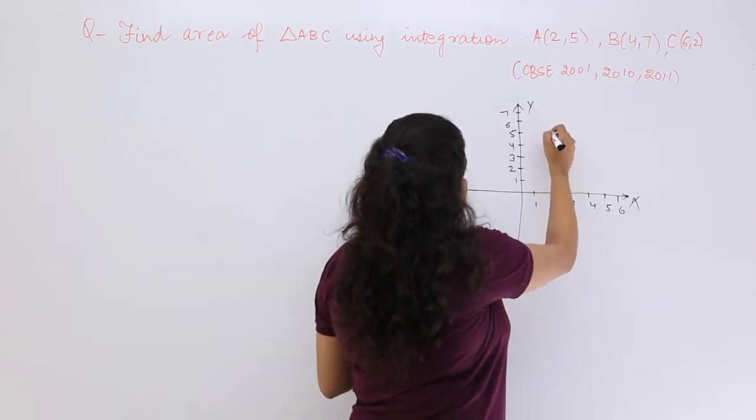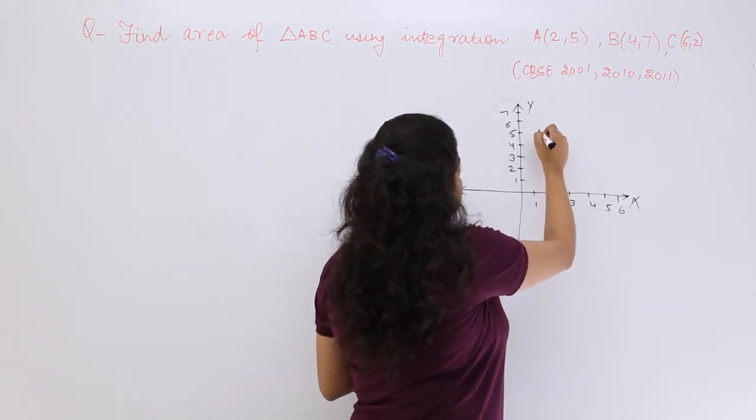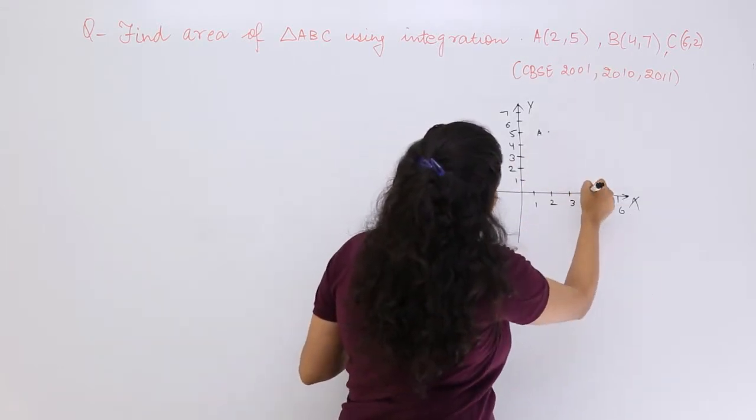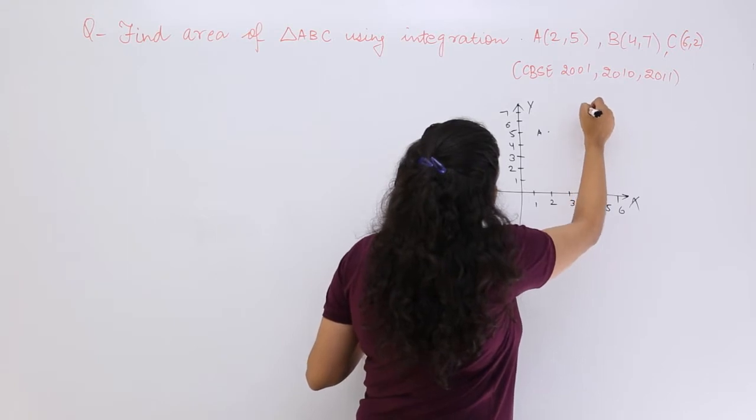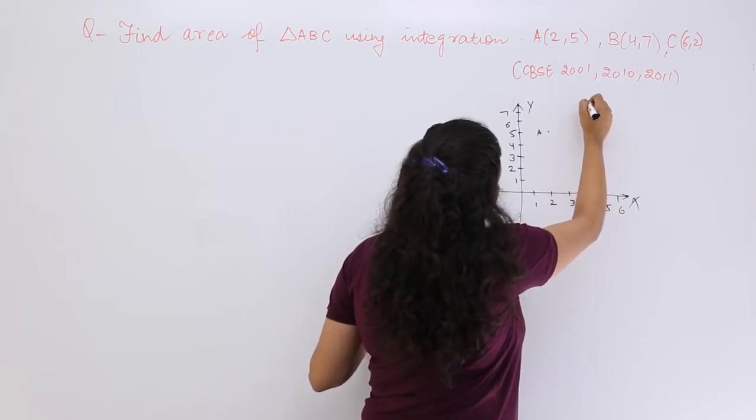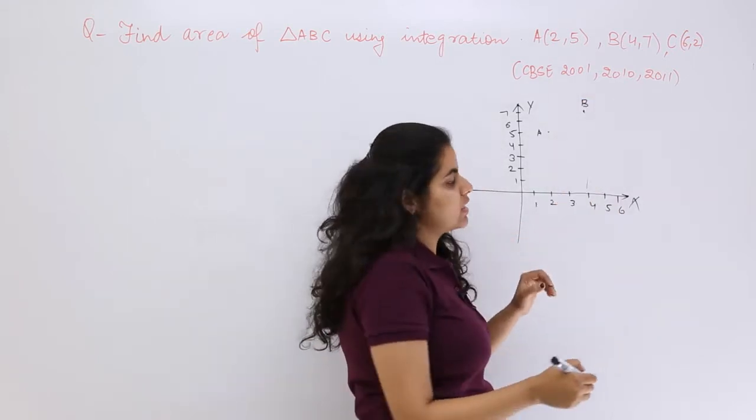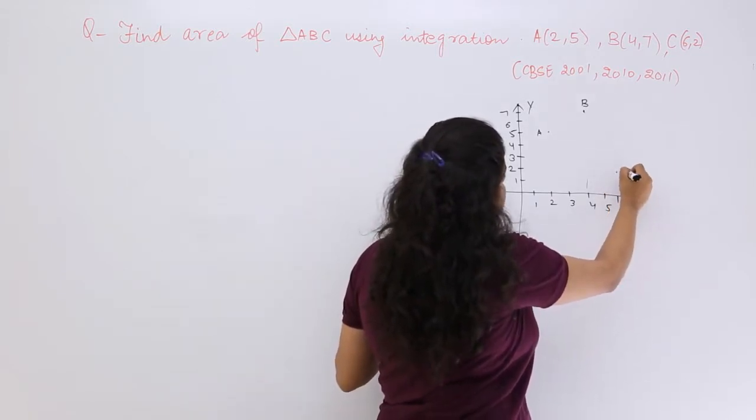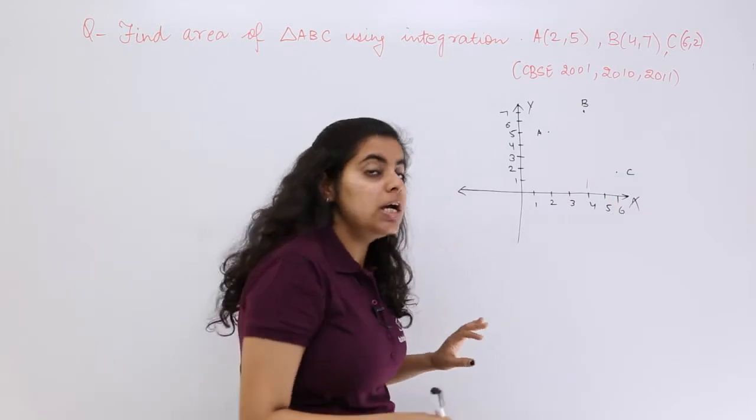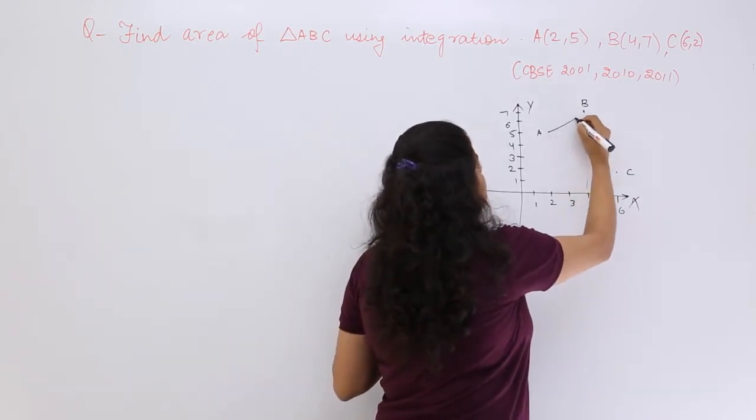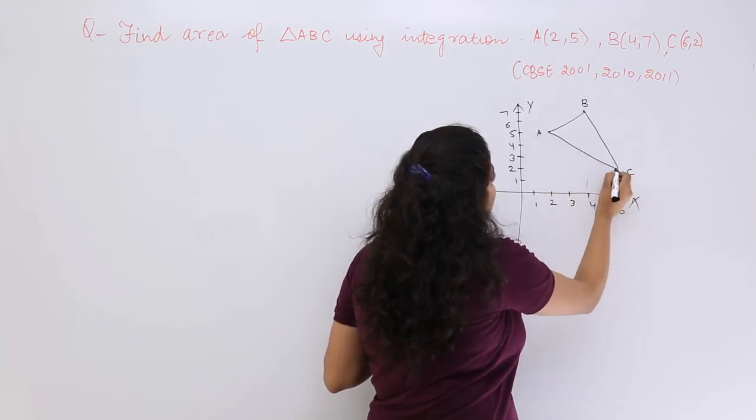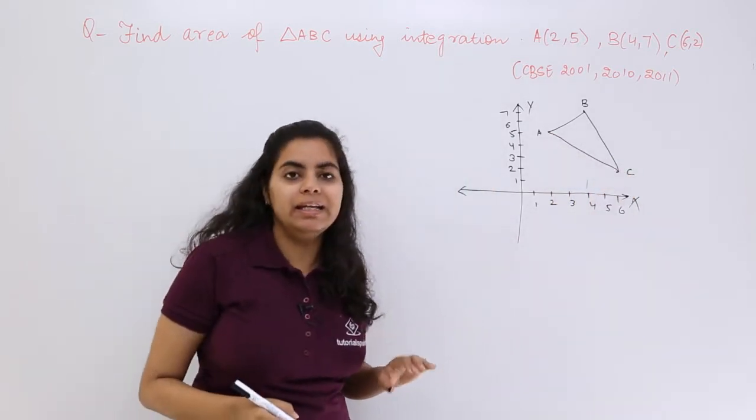Now A is (2,5), so A is somewhat here. Then B is (4,7), so B is somewhat here. And C is (6,2), so C is somewhat here. This is very rough just to explain to you. Now you join these three things, you get a triangle and that triangle's area you have to find out not directly but by integration.